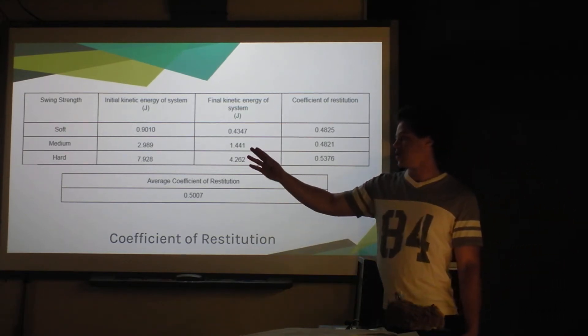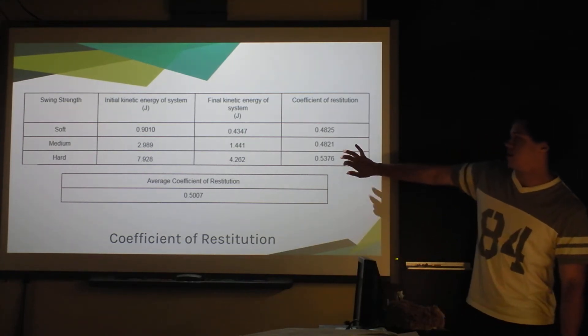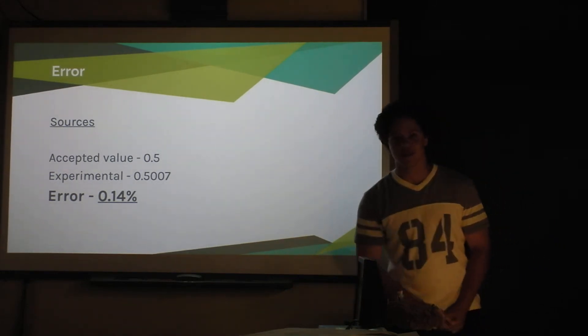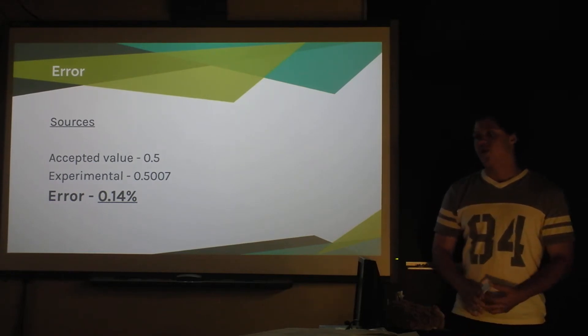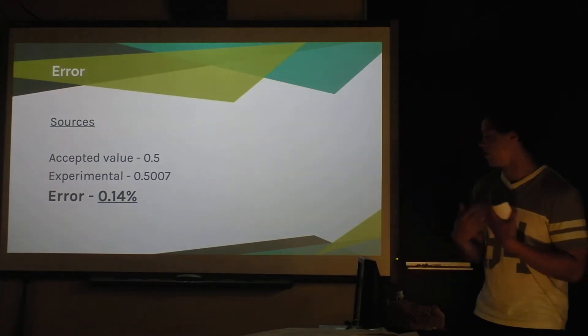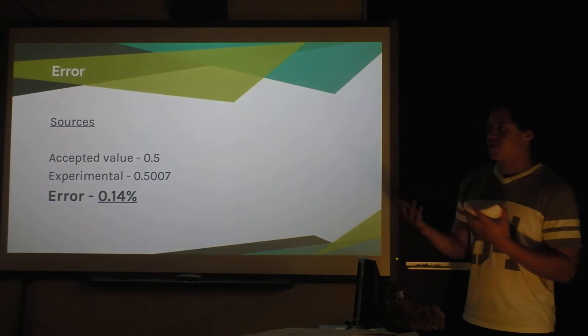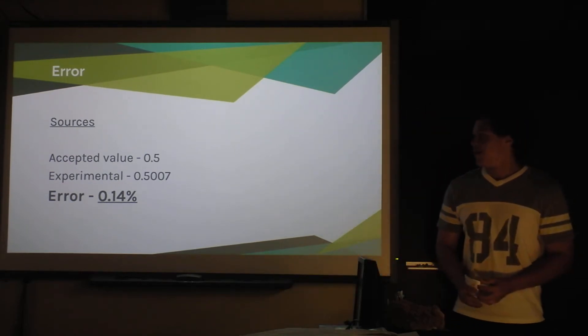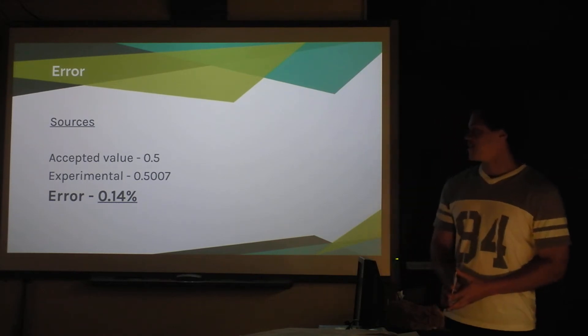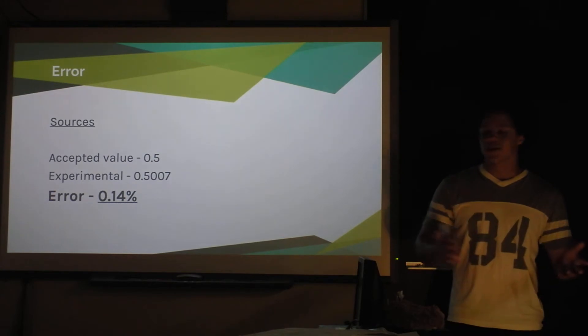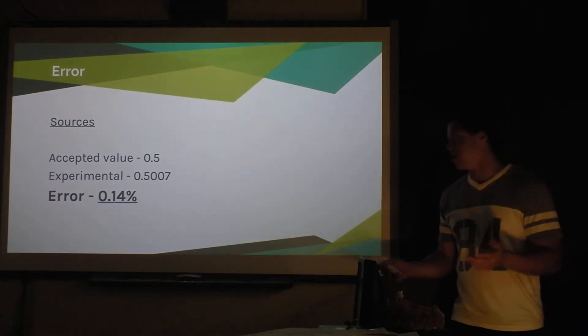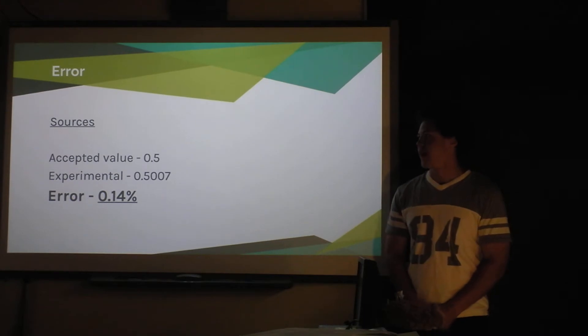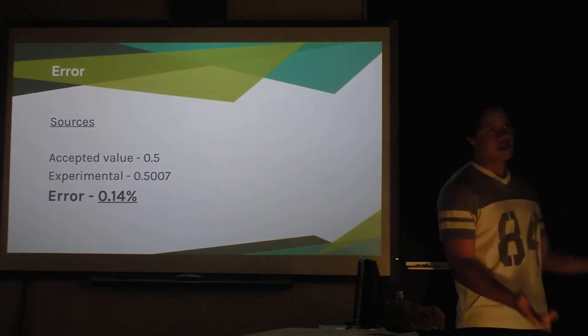So then my average coefficient of restitution was that number, which is really good actually. My error: I almost had no error because the printed value for the coefficient of restitution of metal baseball bats, the one I have, it's 0.5, and mine was 0.5007. So it's actually 0.14% error, and I'm guessing there's a lot of luck in that, but yeah, that's really good. Some of that error, I was expecting a lot more, but a lot of it could come from video analysis because that's hard to do perfectly. Imperfect masses, masses could vary one way or the other. Not hitting the ball perfectly, there could be some friction with the tee, something like that.